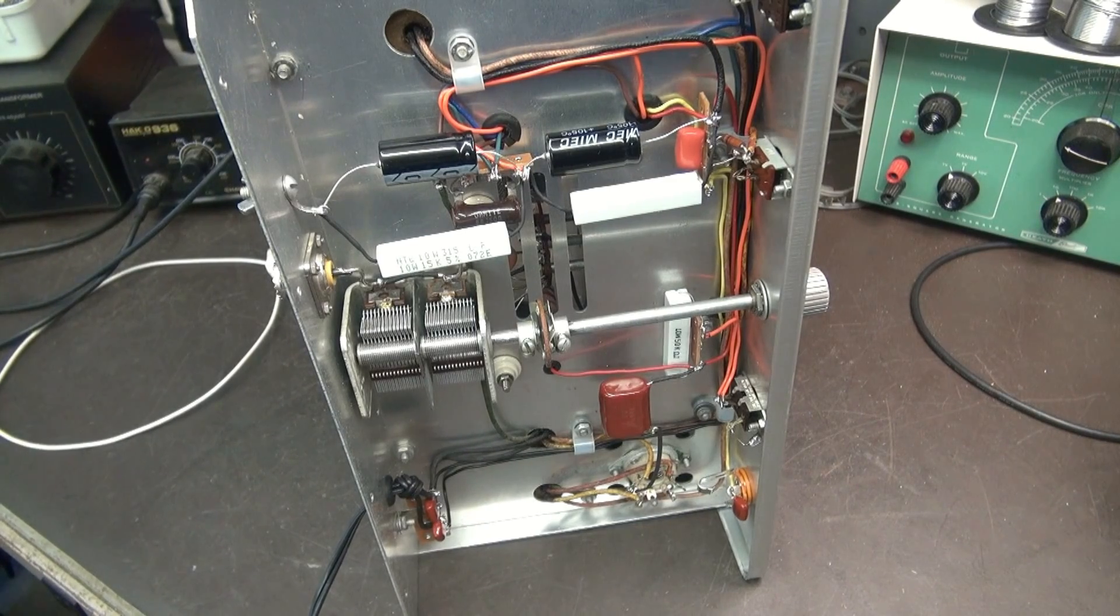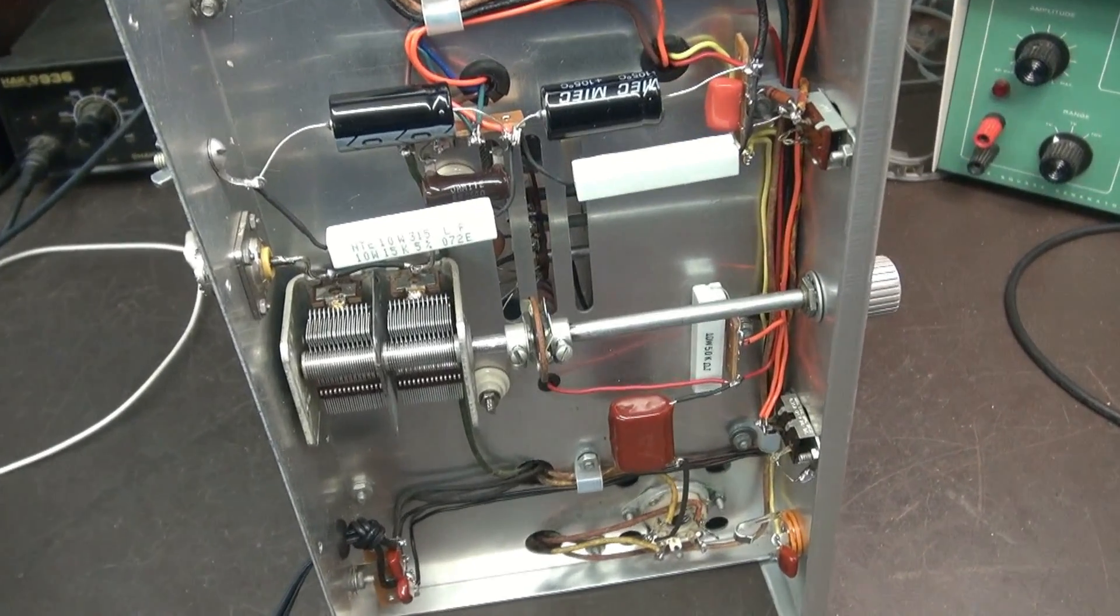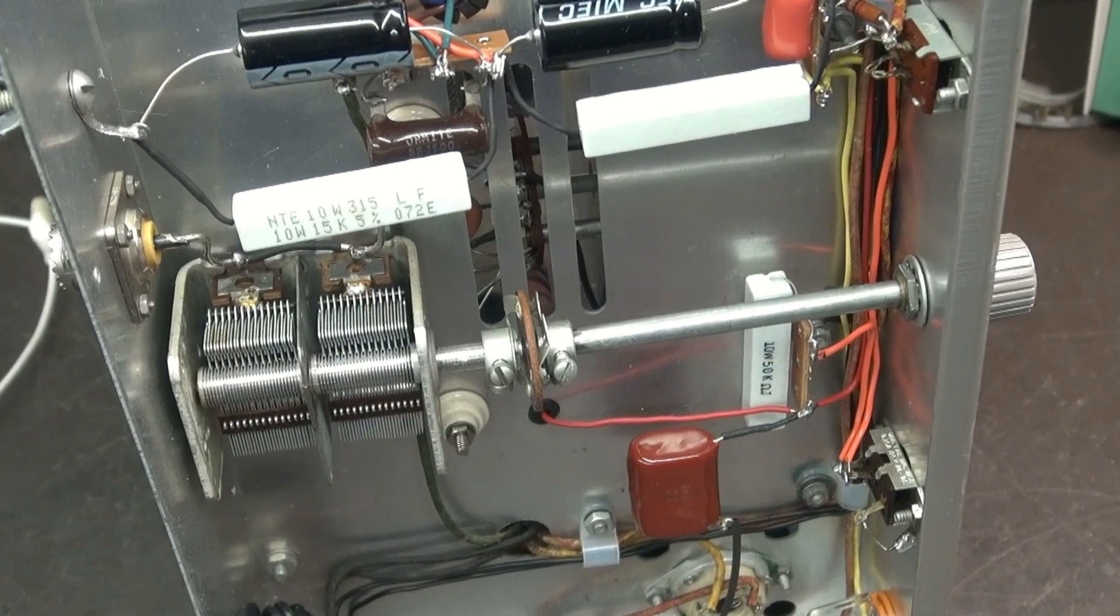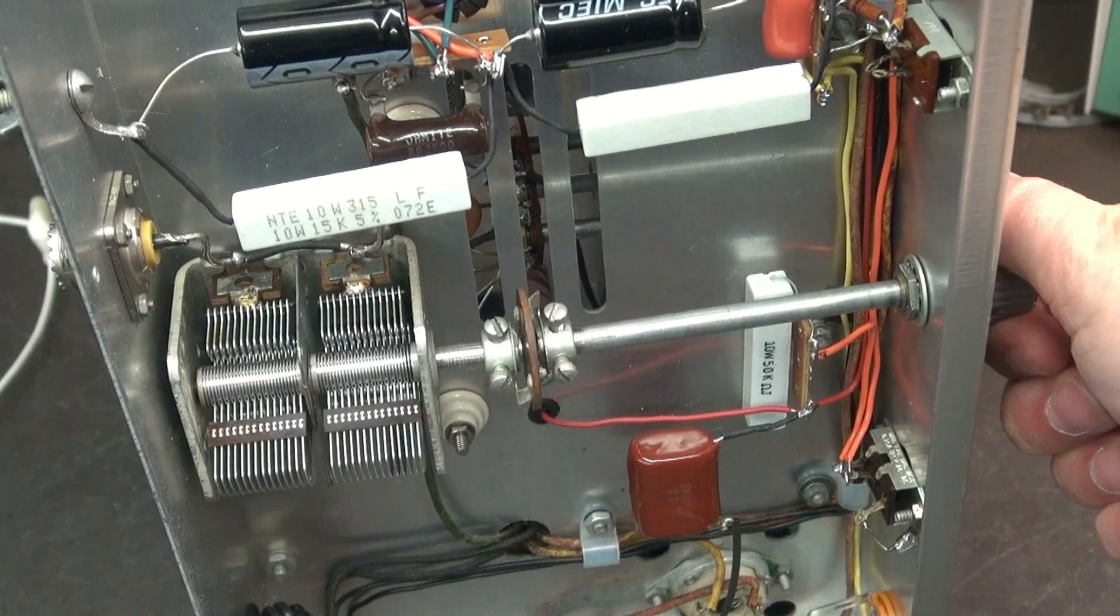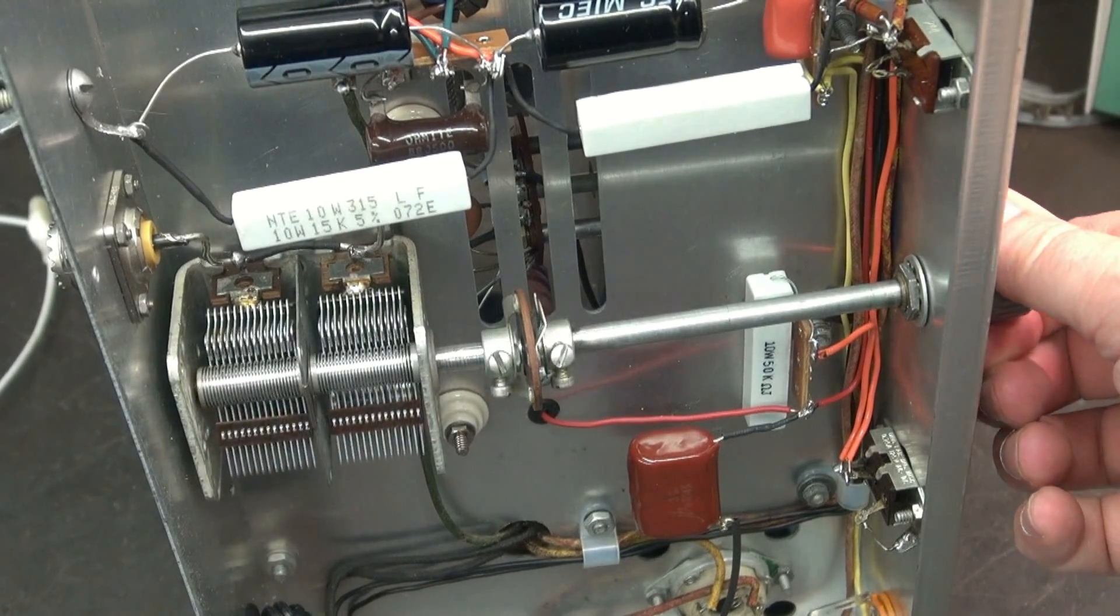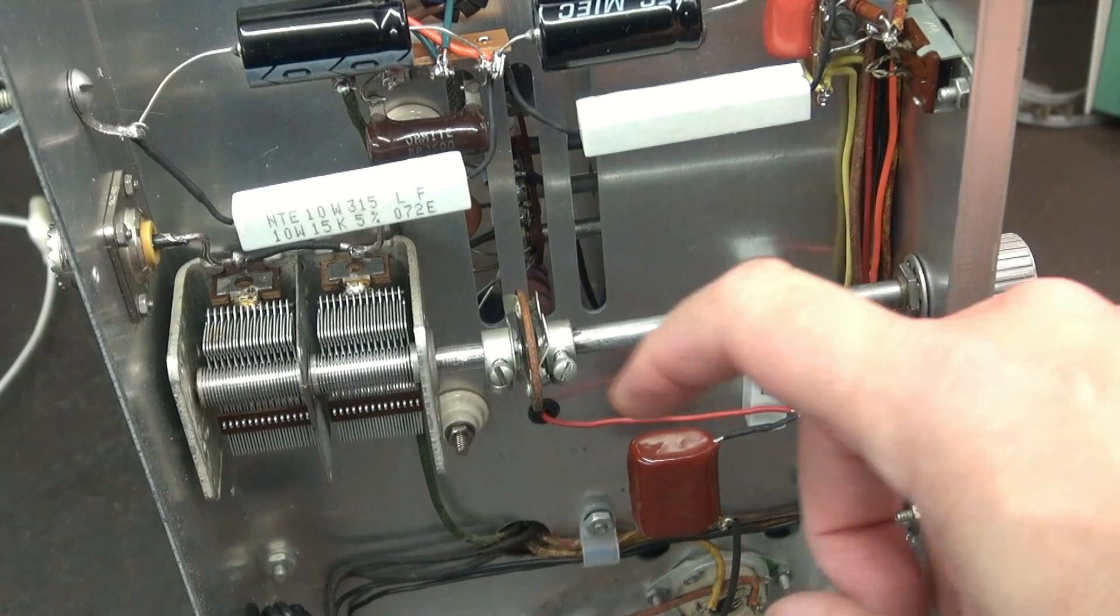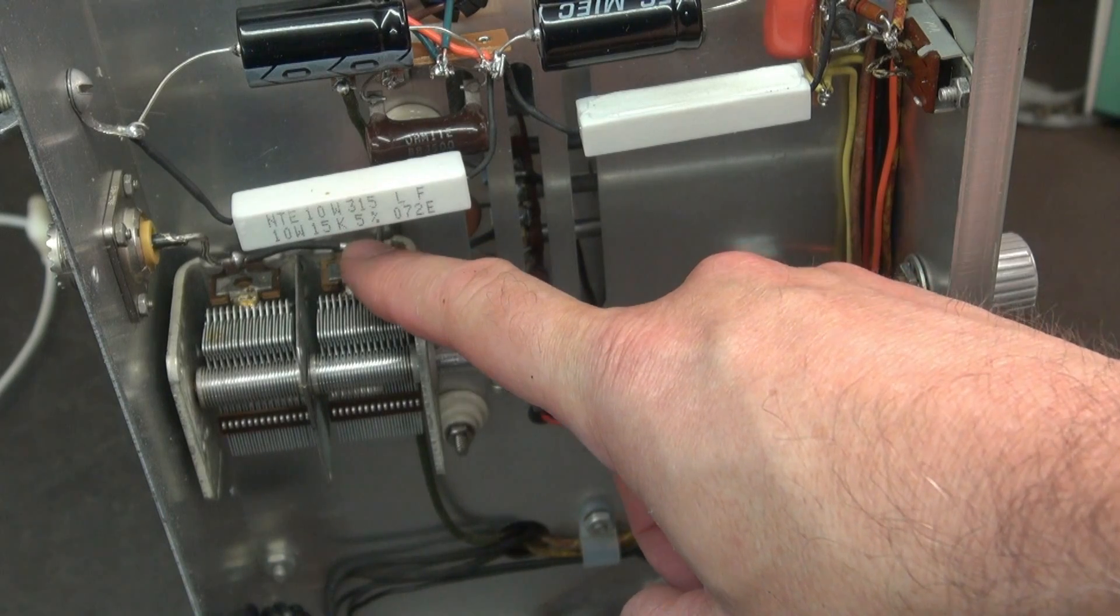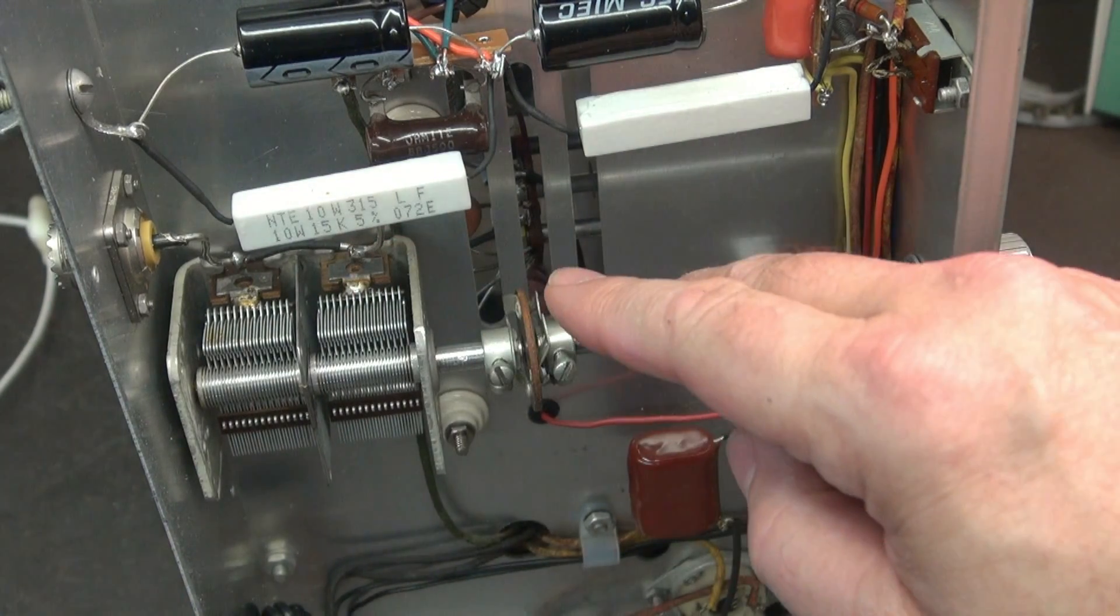Inspection of the solder connections didn't really show me anything that would cause trouble. So I came down here and I thought, well, let me take a good look at the loading cap itself. So you can see when I turn it, it's nice and smooth. I don't hear the plates dragging. Everything looks fine. So I thought, well, let's take a look at the output connections here that go up to the tuning network top side and make sure that's okay.